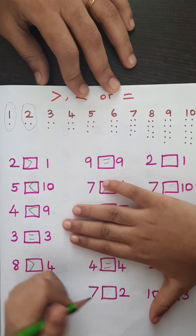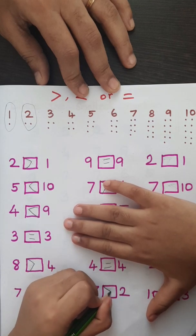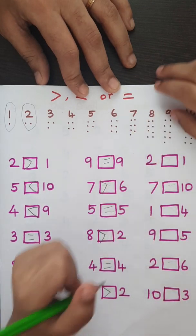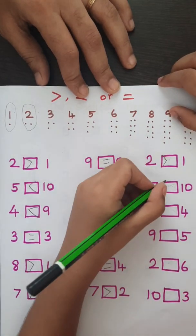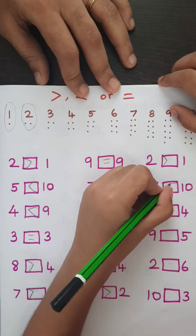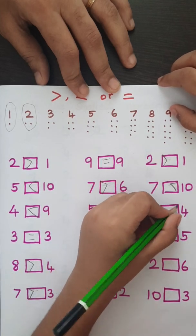So, 4 is equal. So, 7 is bigger. 2 is bigger. 10 is bigger. 10 is bigger.